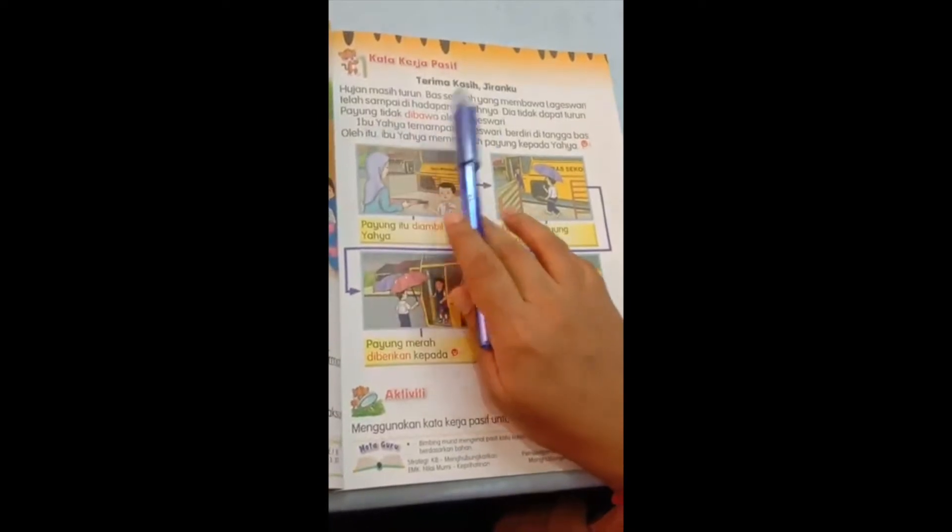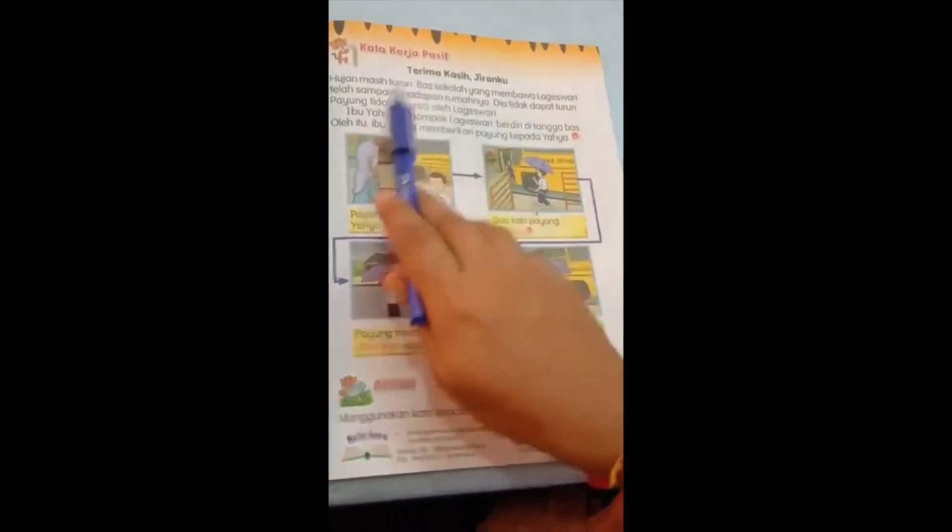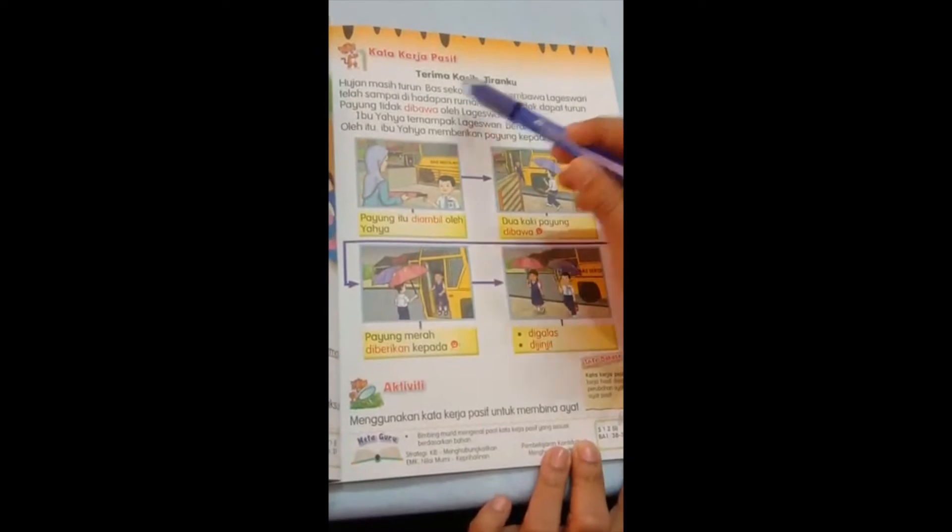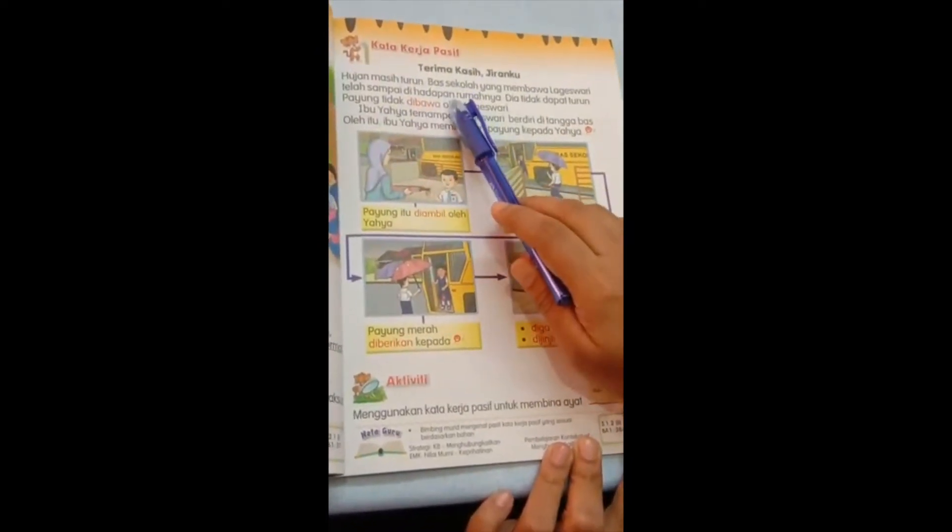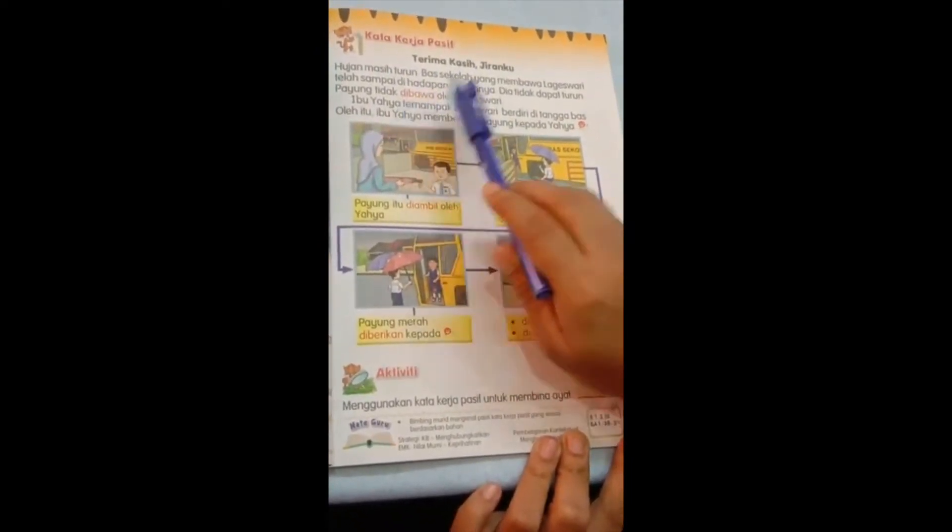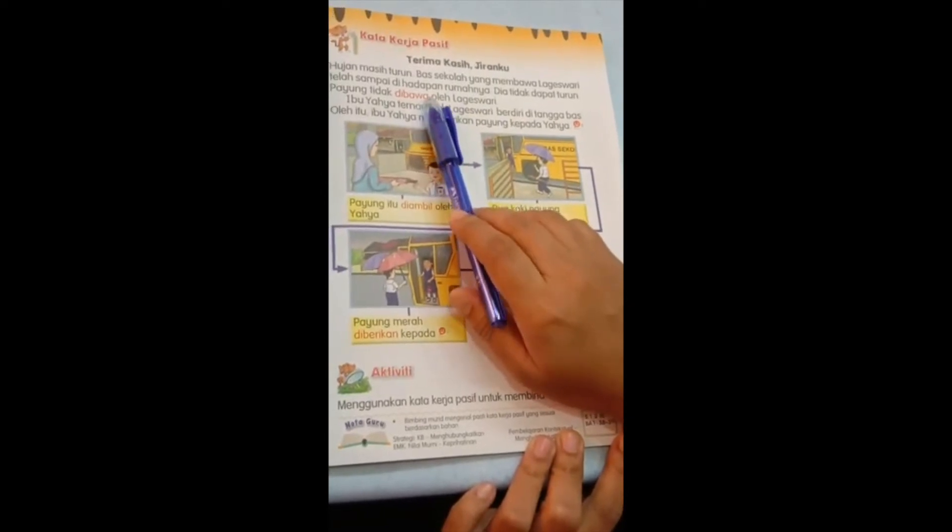Payung tidak dibawa oleh Logeshwari. Look at this word. If I change this to active sentence it will be Logeshwari tidak membawa payungnya. But now it is passive. That's why you can see the word dibawa and not membawa.